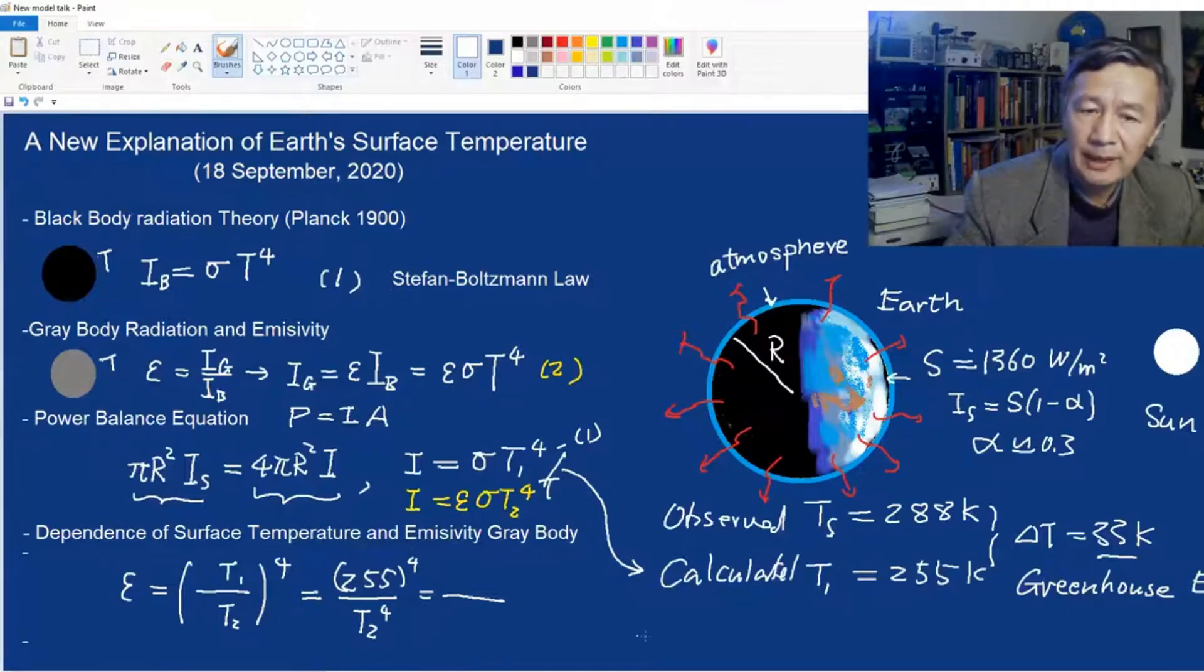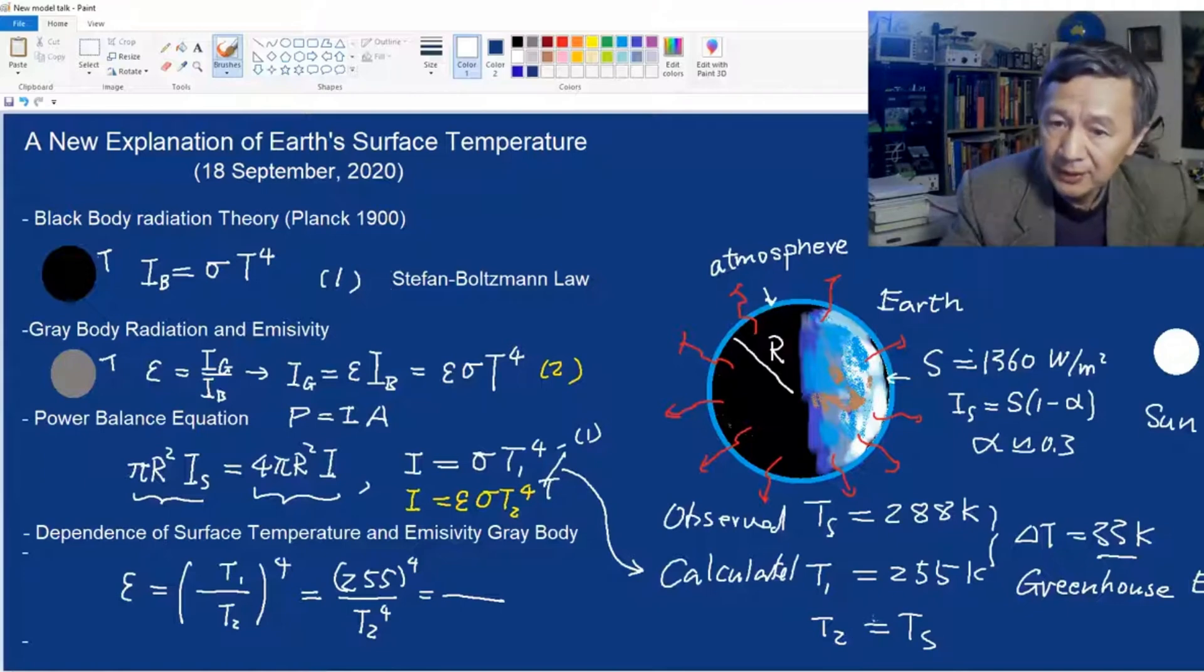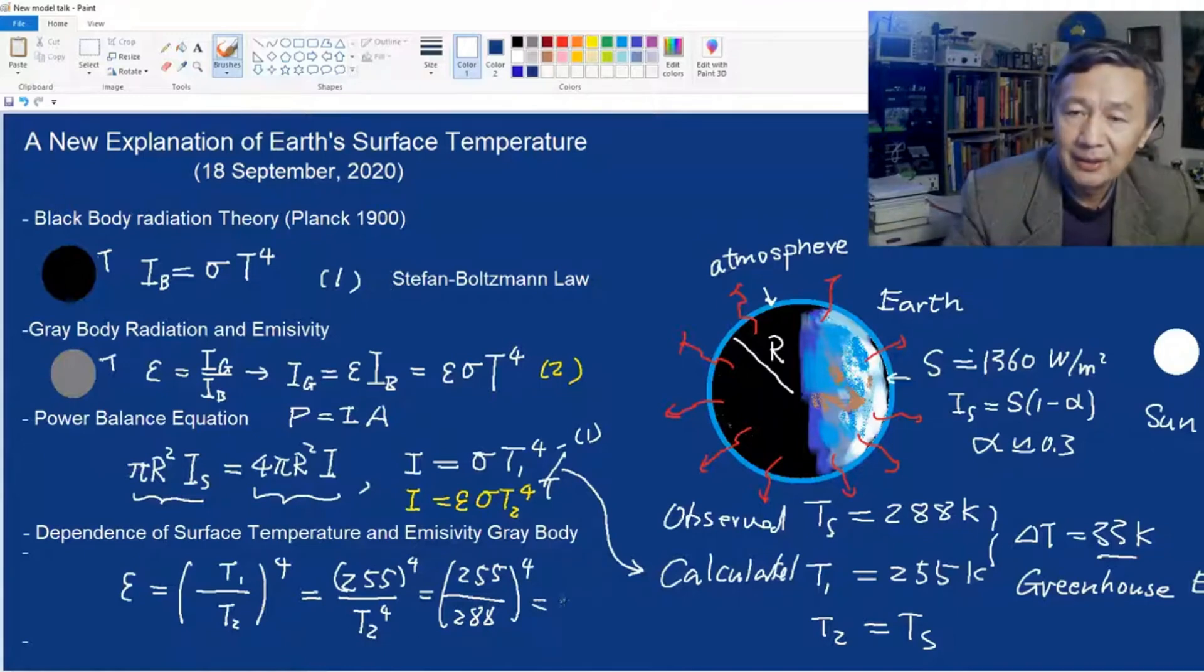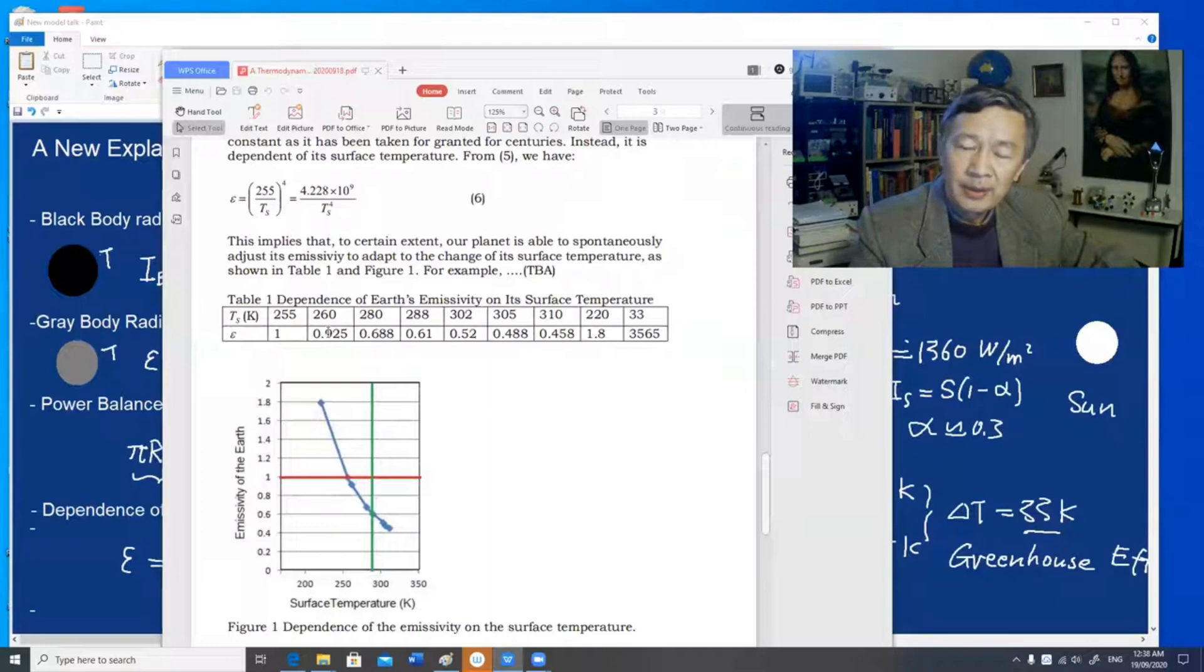Now if we just assume that T₂ is exactly equal to Ts, that is, this is an equilibrium temperature of the gray body, in this case it's Earth. And this is an experimentally measured surface temperature of Earth. So if you equalize that one, we've got this simple ratio: 255 divided by 288 to the power of 4. If you use a calculator, you will obtain that this value is approximately equal to 0.61. So you can argue that the reason why the surface temperature is as it is, is because at present, the emissivity of the Earth is around 0.61.